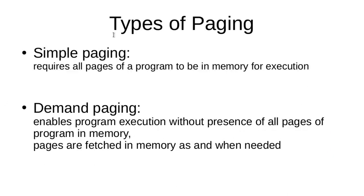Paging has two types. In simple paging, all the pages of the program need to be in memory before execution begins — if a program has five pages, all five must be loaded into memory blocks before it can run. The second concept is demand paging, which is more efficient: it enables program execution without all pages present in memory. With demand paging, execution can begin using just page one; as and when individual pages are required, they are loaded into memory. These are the two types of paging: simple paging and demand paging.